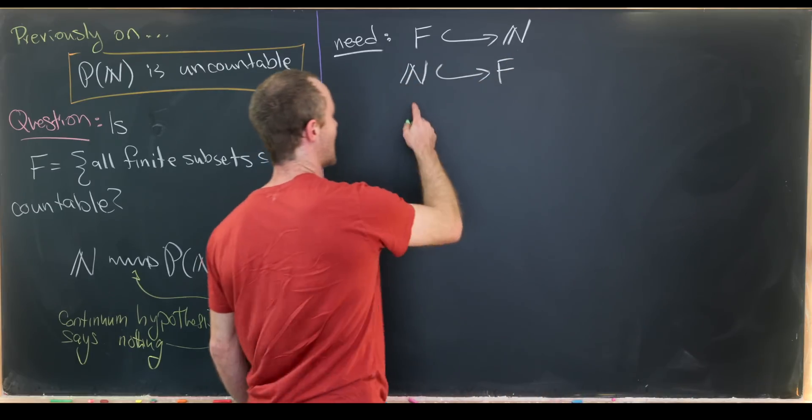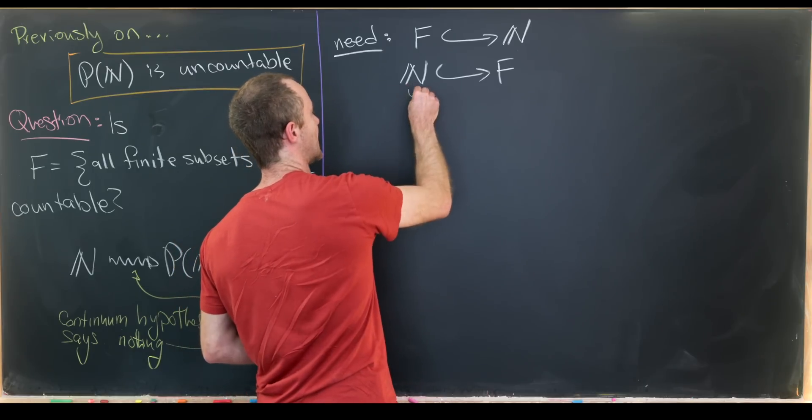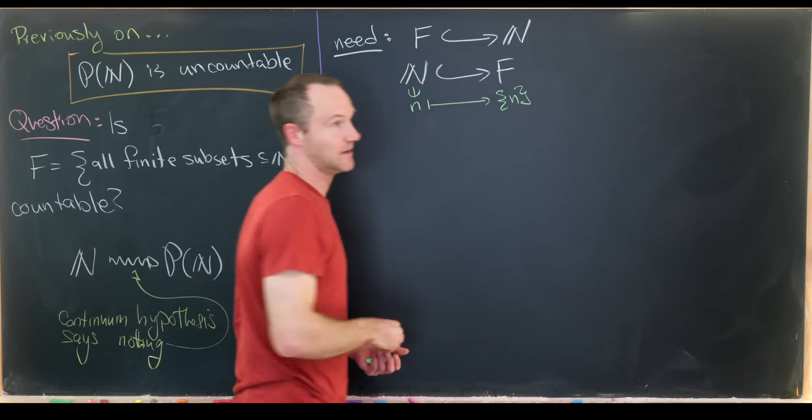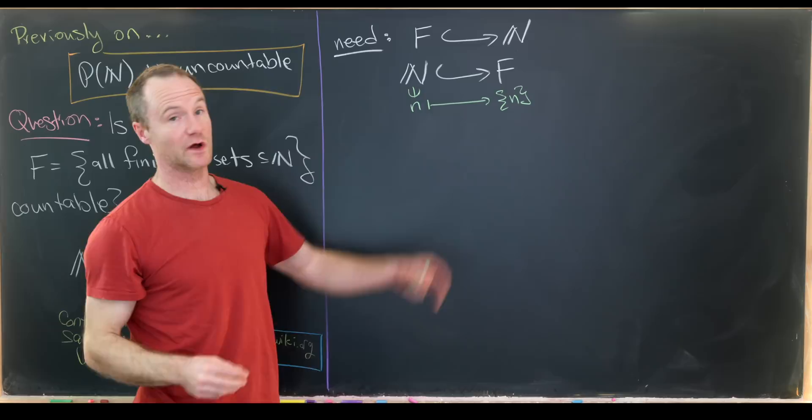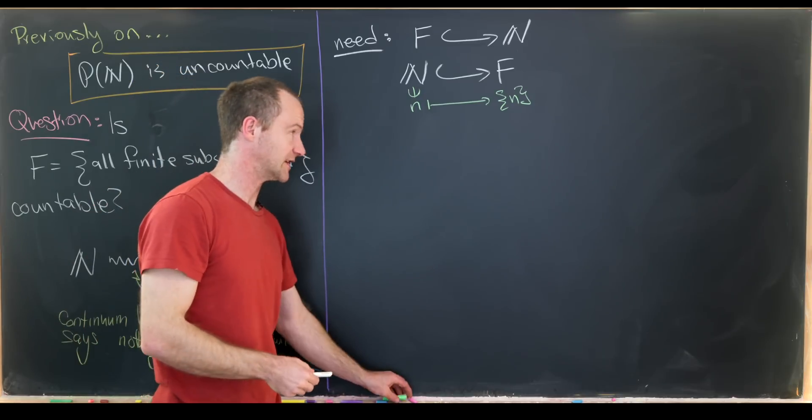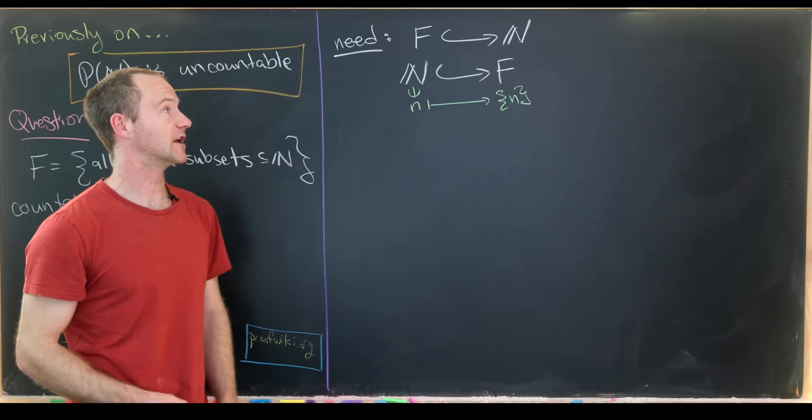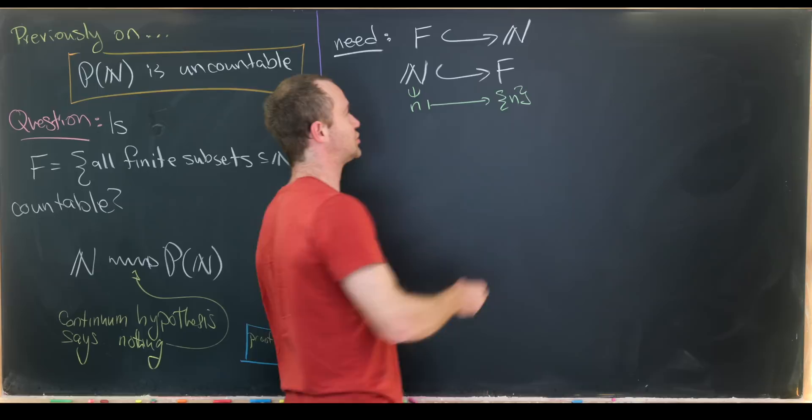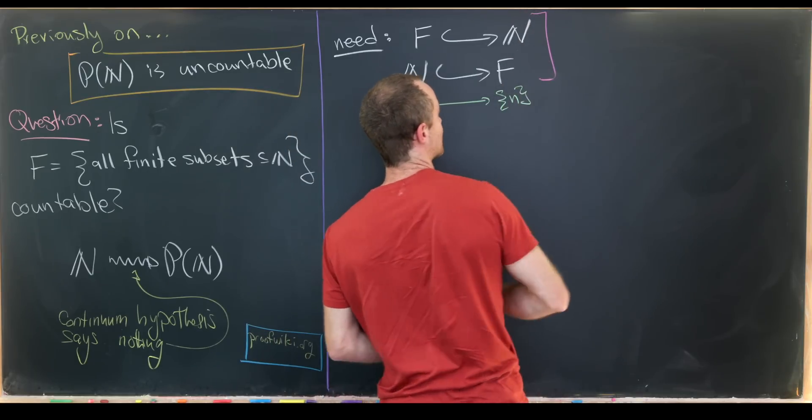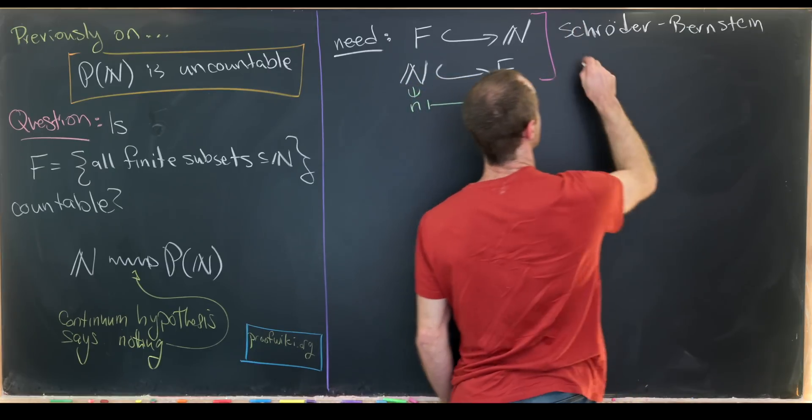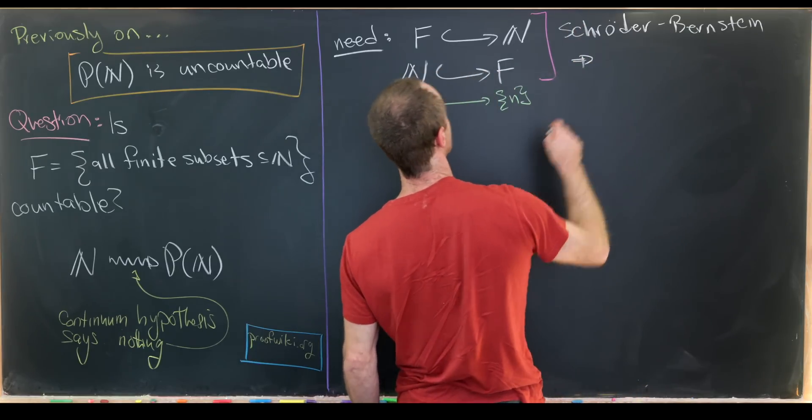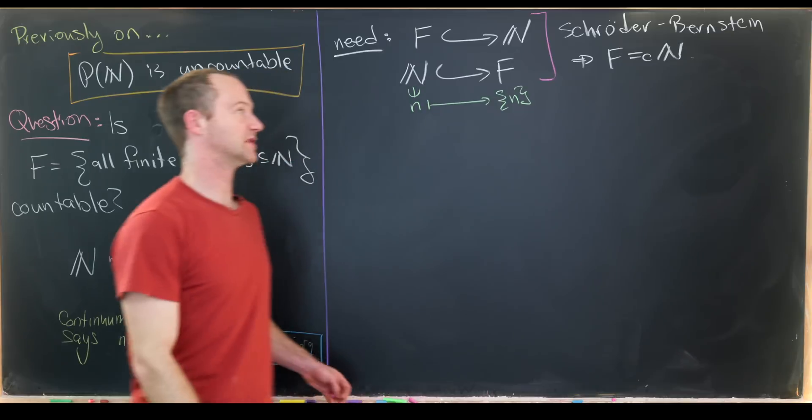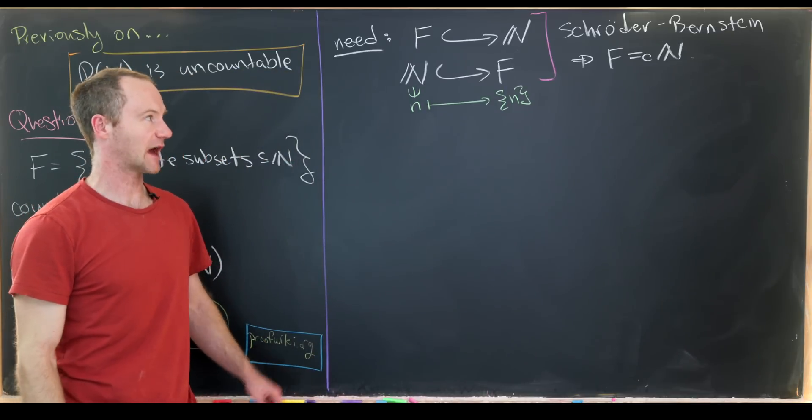In fact, that one-to-one map is fairly straightforward. We can just take a number and assign it to its singleton. That's definitely a one-to-one map going from the right set to the correct set. Then with these two injections, we can apply the Schroeder-Bernstein Theorem, which will say that F is equinumerous with the natural numbers. In other words, F is countable.